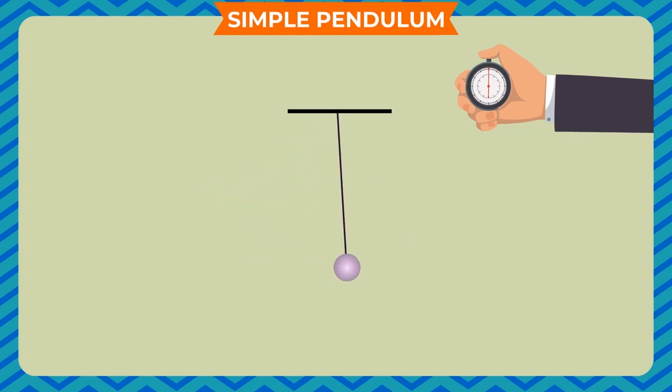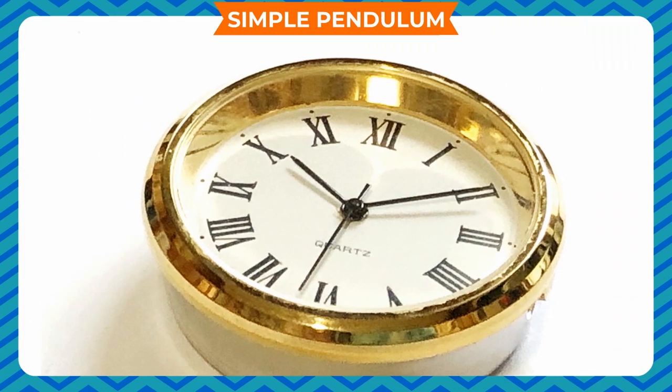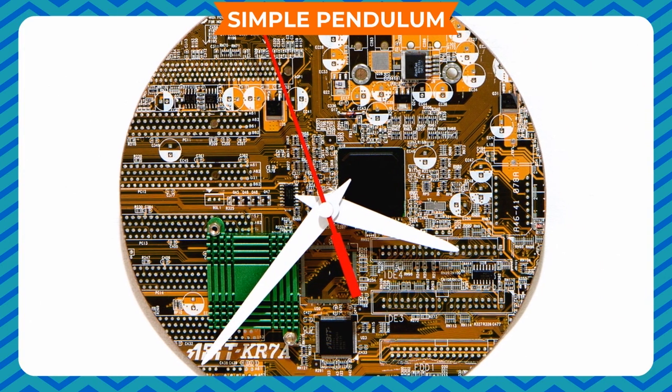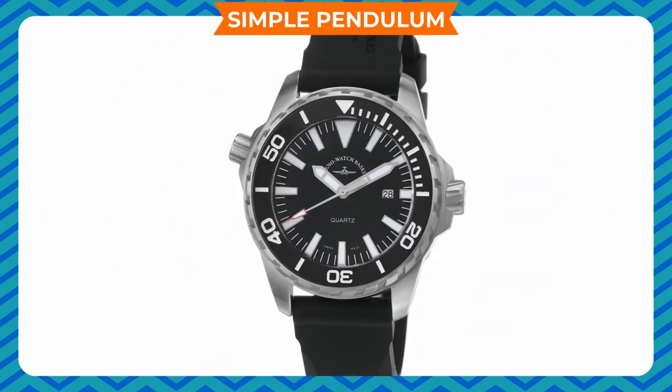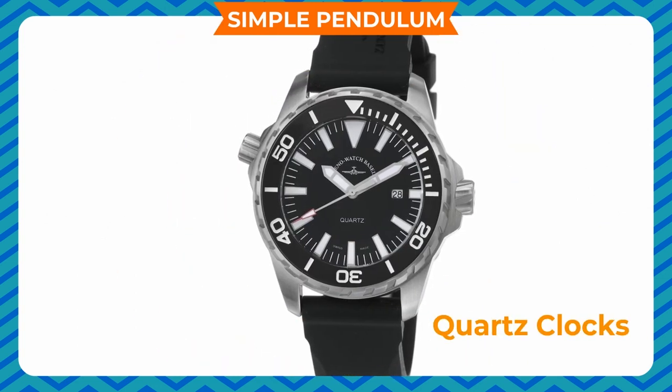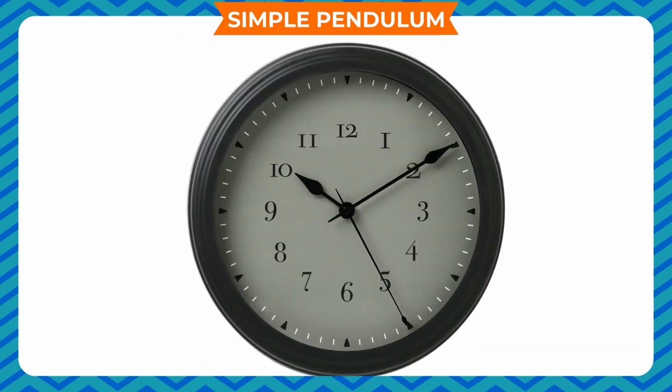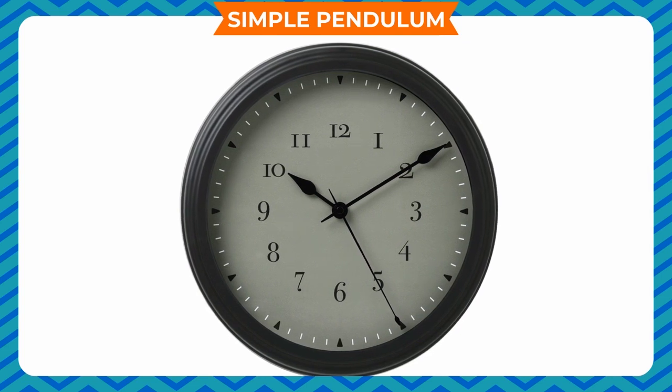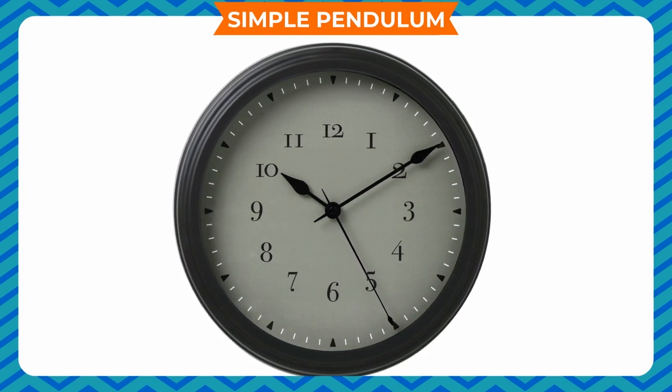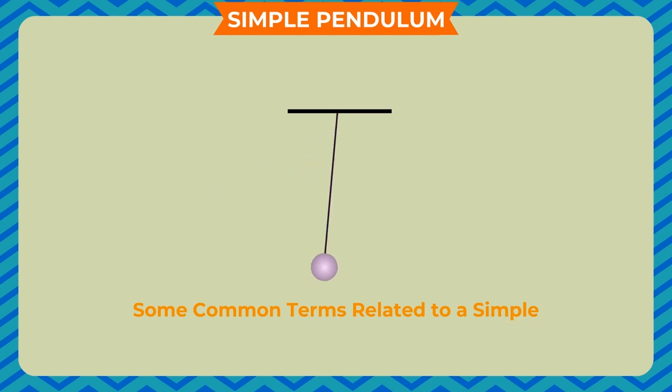Your observations could be different from this. Repeat this a few times and record your observations. Note that a slight change in the initial displacement does not affect the time period of your pendulum. Nowadays, most clocks or watches have an electric circuit with one or more cells. These clocks are called quartz clocks. The time measured by quartz clocks is much more accurate than by clocks available earlier.